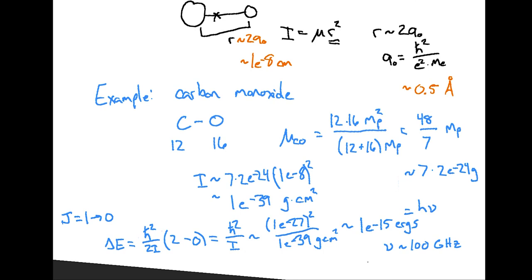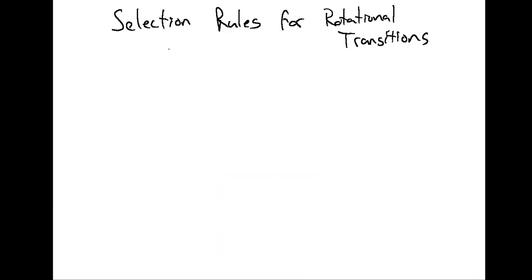The true answer for the j=1 to j=0 transition in carbon monoxide is 115 GHz. So just by assuming a roughly 2-Bohr-radius separation of the atoms and quantizing angular momentum, we got the frequency of this transition to within 15%.